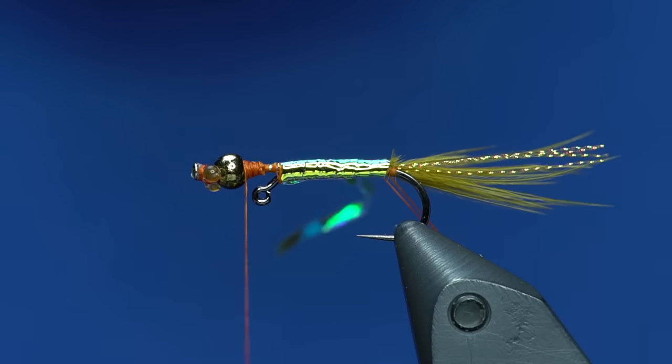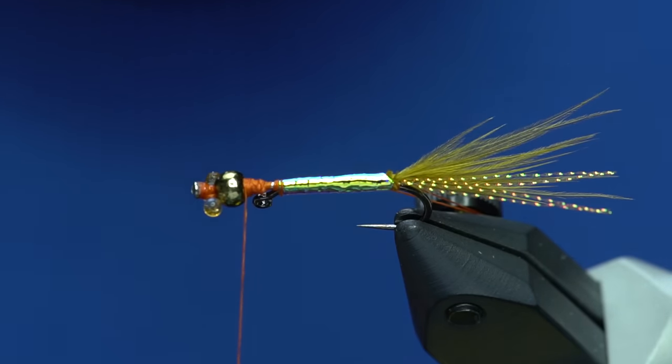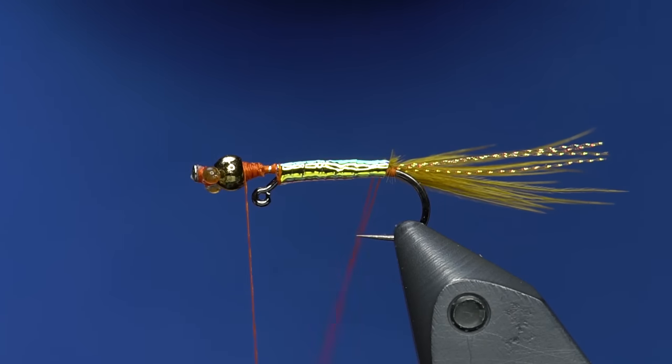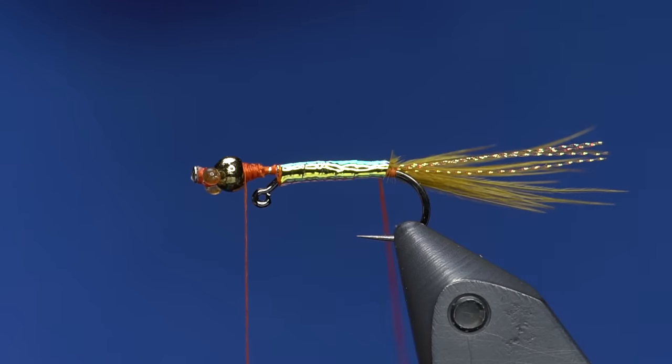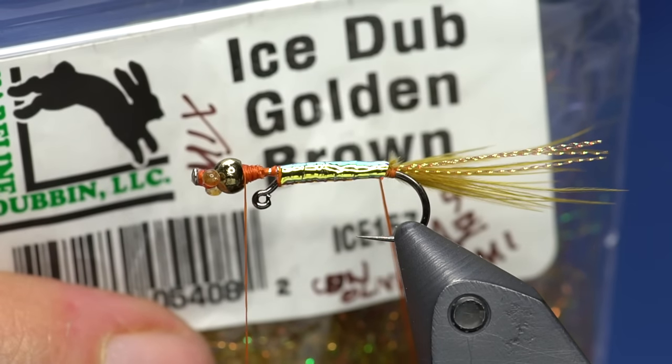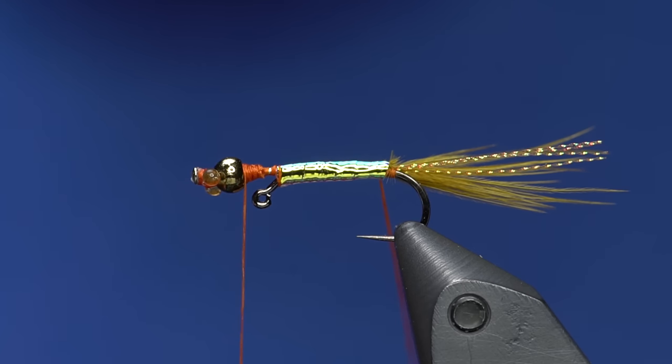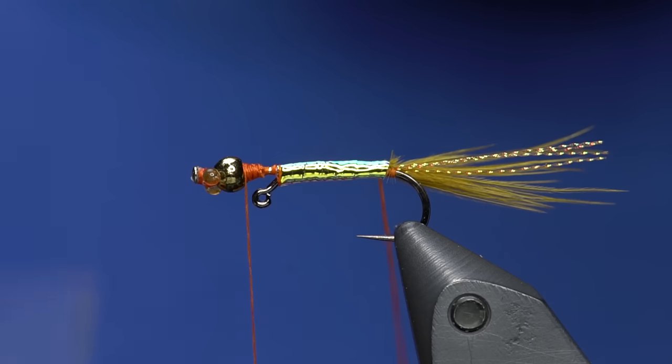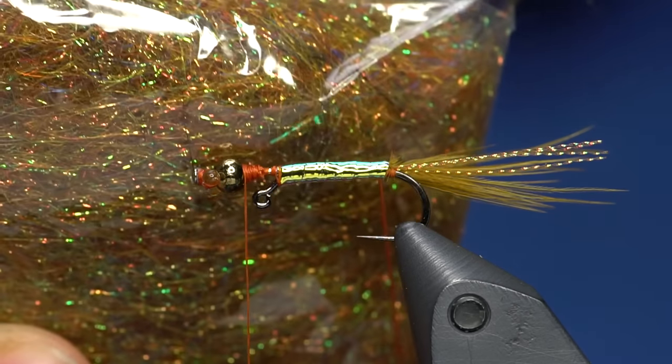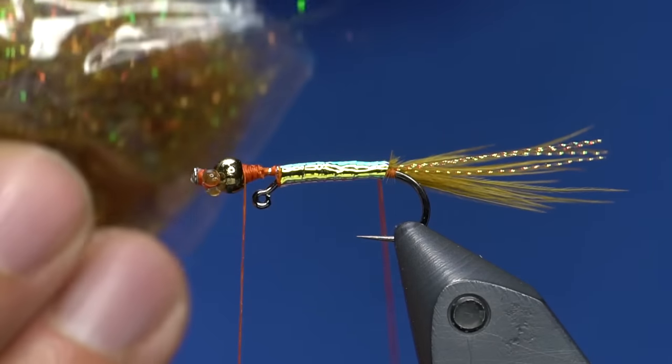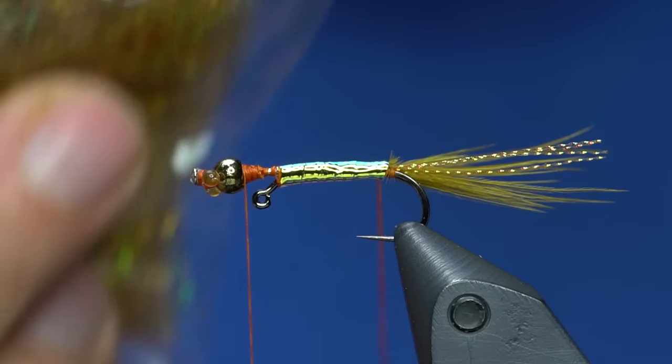Now we grab our dubbing loop. I've got my dubbing blend, which is ice dub in Canadian Arizona semi-seal, Canadian olive, Canadian brown, and then I'll either use ice dub in golden brown or olive brown. I mix them in three equal parts, and this is the coloration that I get. I'm a huge believer in these multi-color spectrumized dubbings.